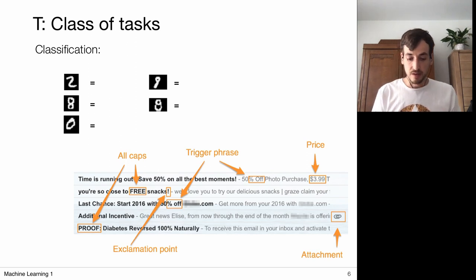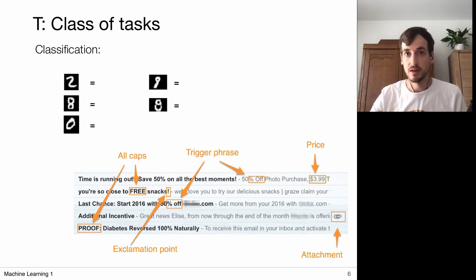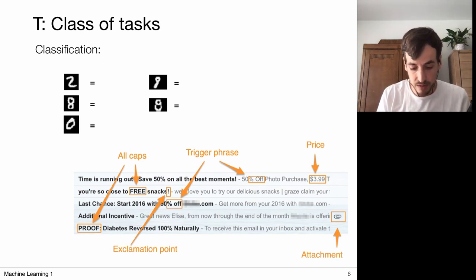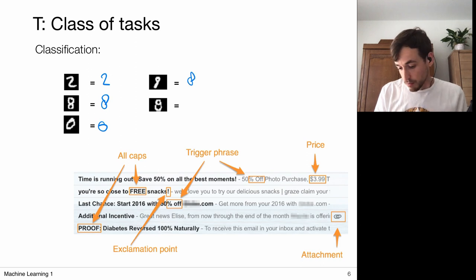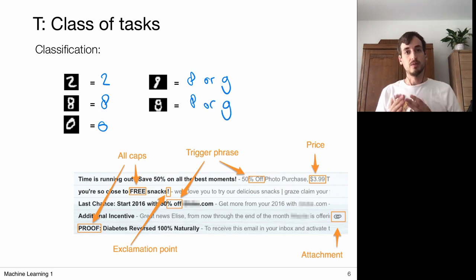Now let's have a closer look at the task. A machine learning algorithm has to perform a particular task, and typically it relates to automating some process that we as humans are used to doing. For example, the task will be classification — classification means we have an input and we want to place it in some class. Let's do it manually: I see a 2 here, an 8 here, this is a 0. This could be an 8 or a 9 — I'm not fully sure. But the point is we want to assign each image to one of the particular classes.